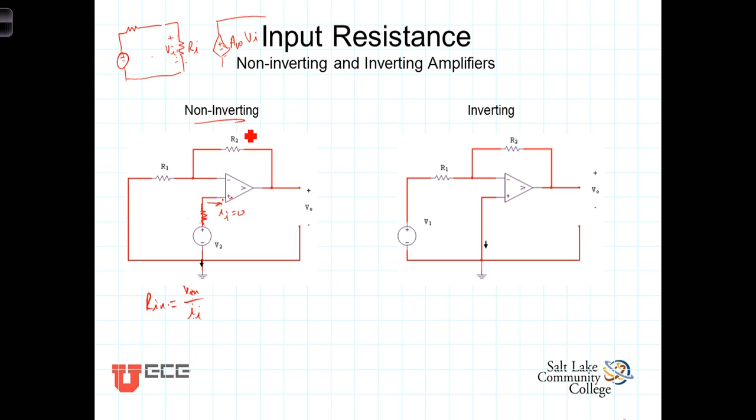So for the non-inverting configuration, we have RN is equal to VIN, which is just V2, divided by IN, which is zero. So the input resistance for the non-inverting amplifier is infinite.